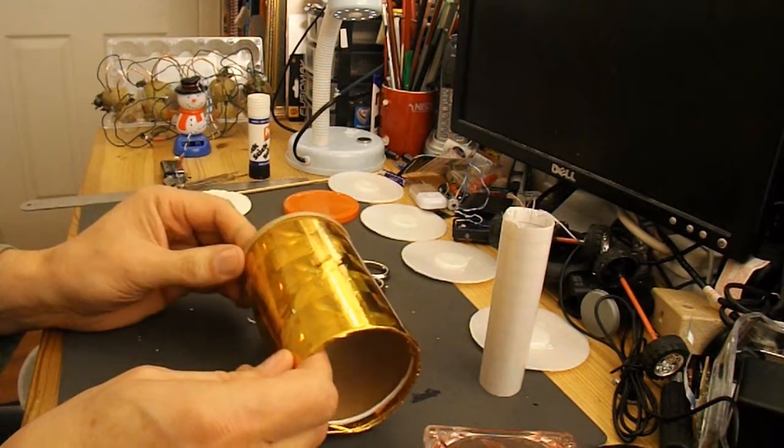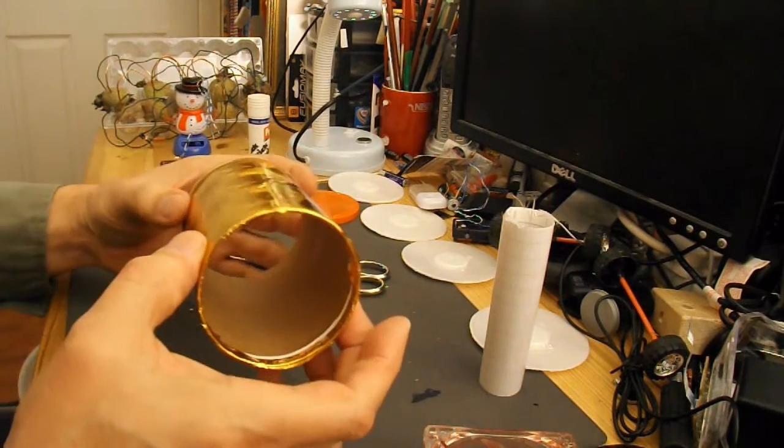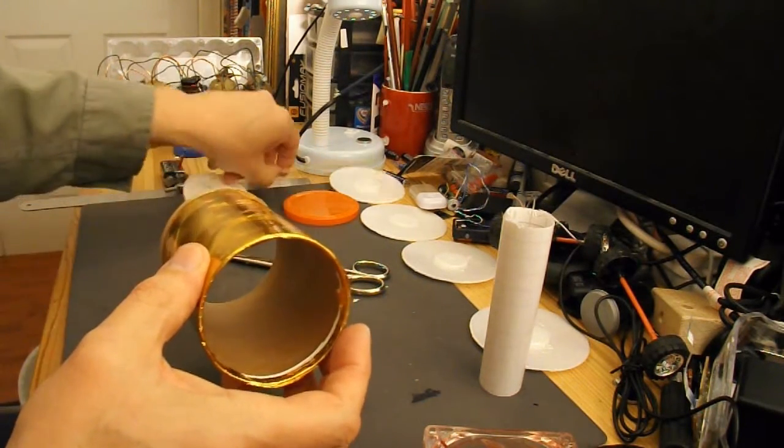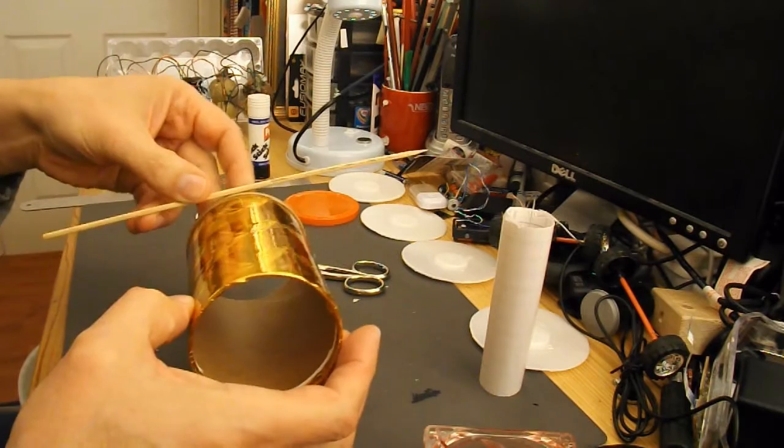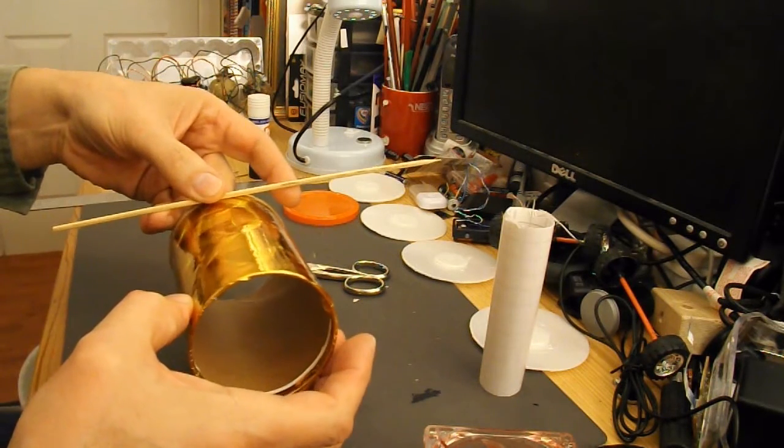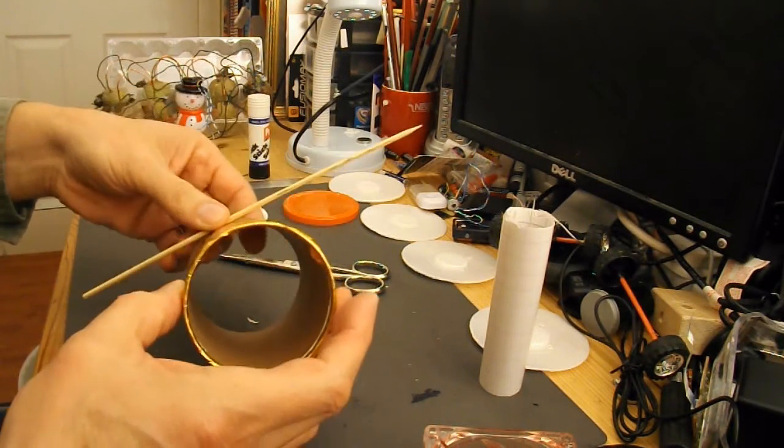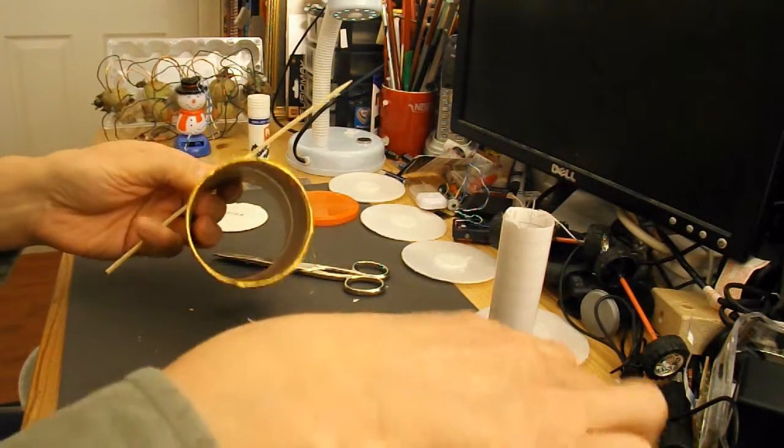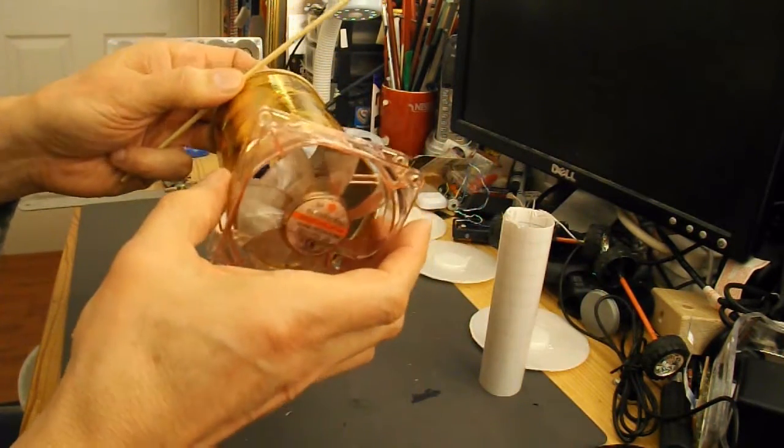So now we've got to drill some holes through so that we can put the axle through. Glue the motor in place.